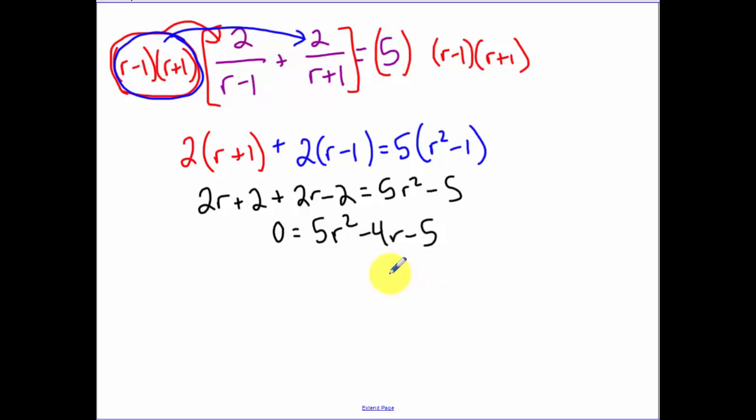Now this doesn't factor so we have to do our favorite friend, the quadratic formula: opposite of b plus or minus the square root of b squared minus 4ac, all over 2a.